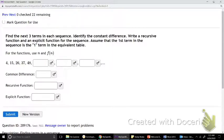In this problem, it asks us to find the next three terms in each sequence, identify the constant difference, and then write a recursive and an explicit function for the sequence. Assume that the first term in the sequence is the one term in the equivalent table.